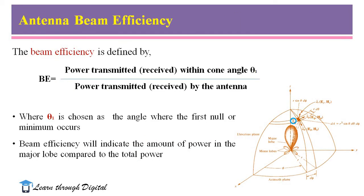Antenna beam efficiency is defined by the ratio of power transmitted or received within a cone angle theta1 to the power transmitted or received by the antenna, where theta1 is chosen as the angle where the first null or minimum occurs.